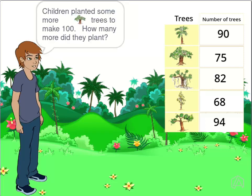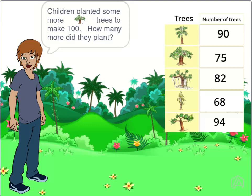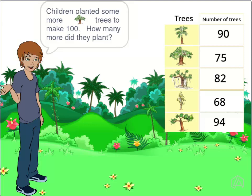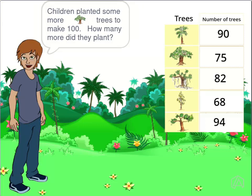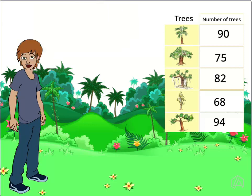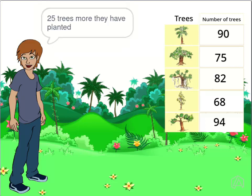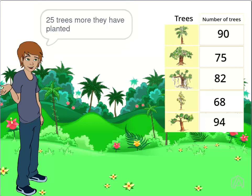Children planted some trees to make 100. How many more did they plant? 25 trees more they have planted.